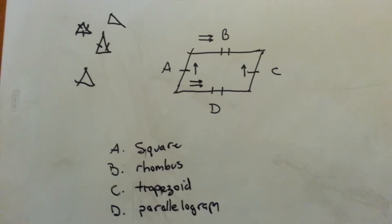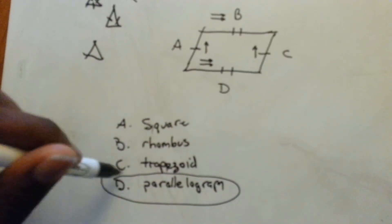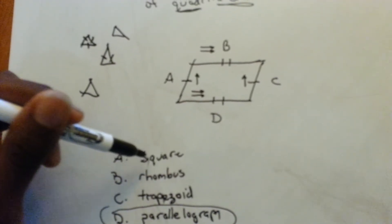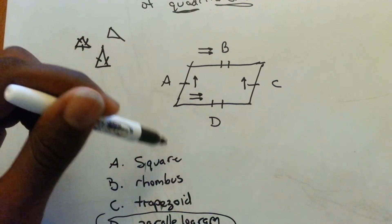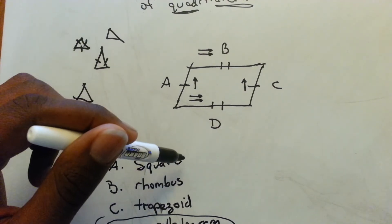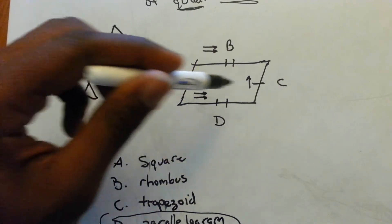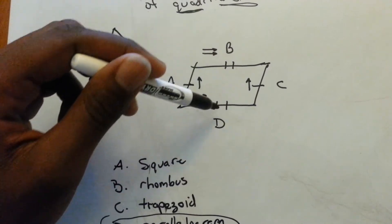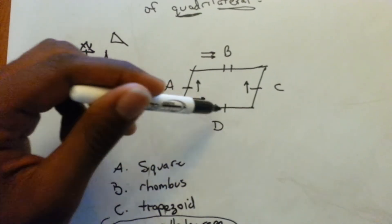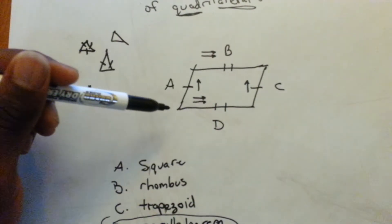The answer is parallelogram, but let's go through each option. For a square, all four sides must be equal length, all angles must be equal, and opposite sides are parallel. This figure has opposite sides parallel — A and C, B and D — but all four sides are NOT the same length. A and C share one tick mark, while B and D share two, so it can't be a square.